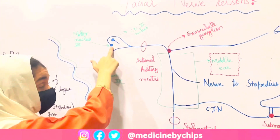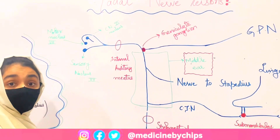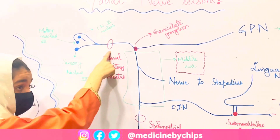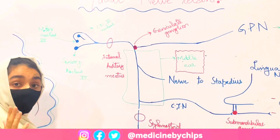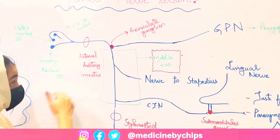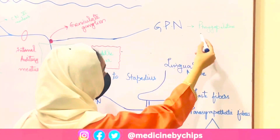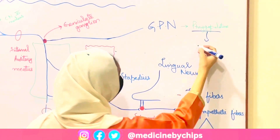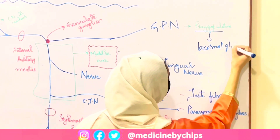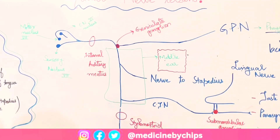The facial nerve begins in the pons. It winds around the abducens nerve, forming the internal genu and the facial colliculus. This is the motor nucleus of cranial nerve 7. Along with the sensory nucleus of cranial nerve 7, they unite and leave the brainstem at the pontomedullary junction. It then enters the internal auditory meatus, passes through the internal ear, and enters the geniculate ganglion. From the geniculate ganglion, the greater petrosal nerve arises, traveling to the pterygopalatine ganglion to supply the lacrimal gland, controlling tear production.